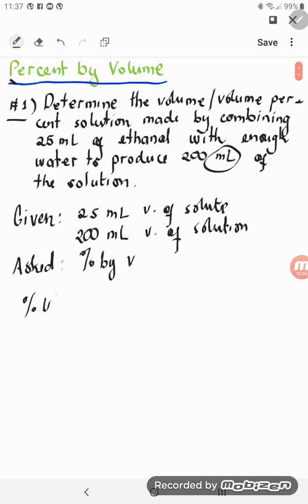Percent volume is equal to volume of solute. This is pretty similar with percent by mass. Volume of solute divided by volume of solution times 100.